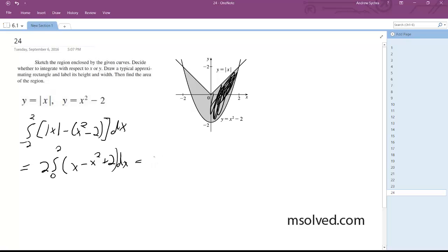Alright, this becomes, after integrating it, it becomes 2 times the quantity 1 half x squared minus 1 third x cubed plus 2x from 0 to 2.